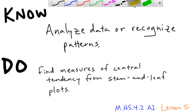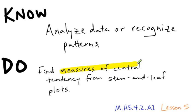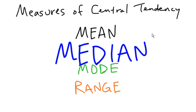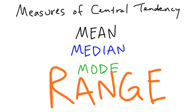We're going to look at measures of central tendency. What are those? We have several of them: mean, median, mode, and range.